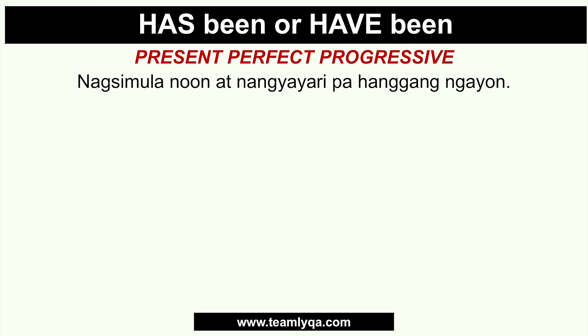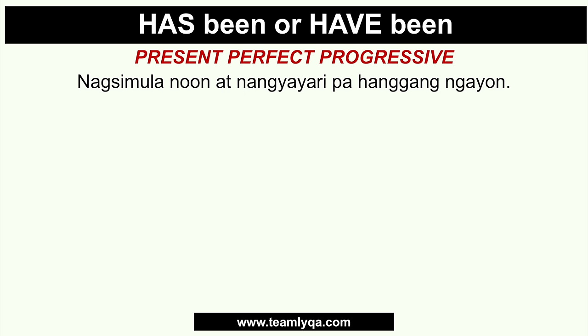Let's establish the situation. Has-been or have-been is used when the action or event started in the past and is still happening now, with the potential to continue in the future. So the action started in the past and continues into the present — that's why it's called present perfect progressive. Progressive means it's ongoing, and present means it's still happening now.